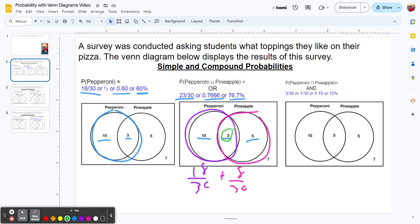The 3 was in both circles, so we have to take that out. We subtract 3 over 30 because we double counted. So 18 plus 8 minus 3 gives you 23 out of 30. That's another way of doing it.